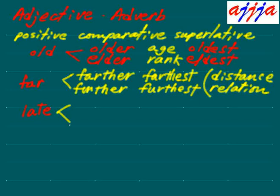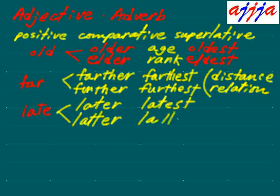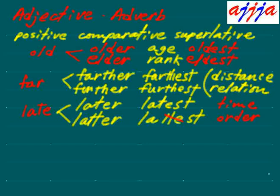What about 'late'? Also two different ways. First: 'later' and 'latest' — these refer strictly to time. Second: l-a-t-t-e-r, 'latter,' and l-a-t-t-e-s-t becomes 'last' — the two l's and e drop out to form 'last.' So 'later/latest' is about time, while 'latter/last' is about order.